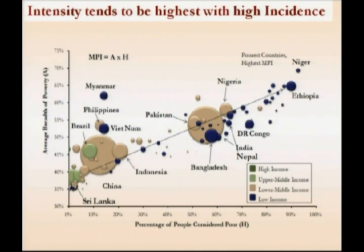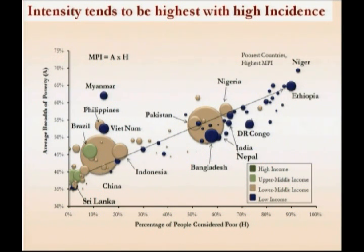The other interesting point is that the countries are color coded according to their income category, low income being navy blue and upper middle income being green. You can see that the blue countries include the high MPI intensity and head count countries, but they also include some with very low MPI, such as Sri Lanka or Uzbekistan. So there is a message of hope that countries with low income can have very low MPI poverty.